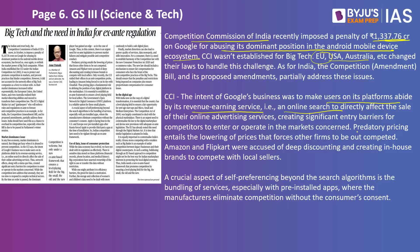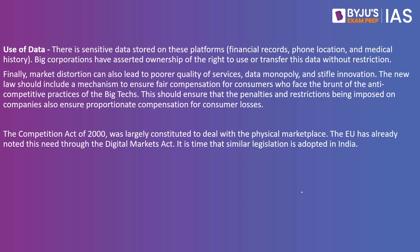These companies also employ predatory pricing — whenever a new company enters, these old companies reduce their prices drastically so the new company cannot compete, and once the new company goes out of business, they raise prices again. Amazon and Flipkart have been accused of this. They also ensure that when you buy a new mobile phone or laptop, they come with pre-installed apps. That is not for your benefit — a mobile phone company has taken money from those app companies to pre-install them. All these things have to be looked into by the CCI.